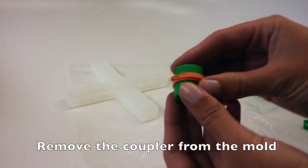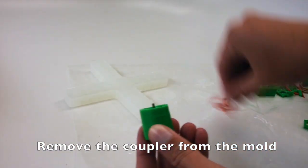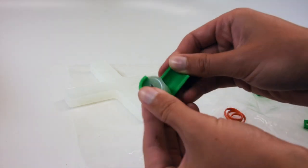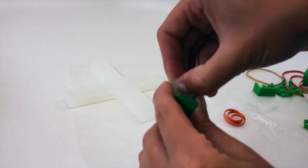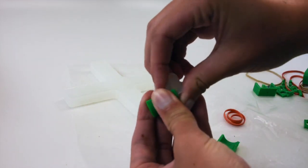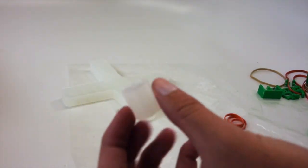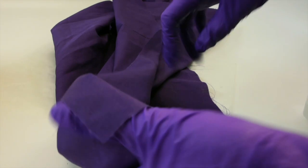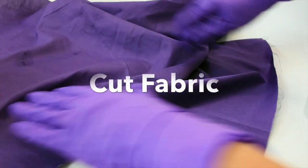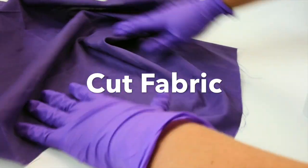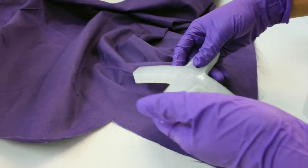Also remove the coupler from the mold. Notice there's a smaller hole and a larger hole. Make sure you cut a square of fabric big enough for your gripper.